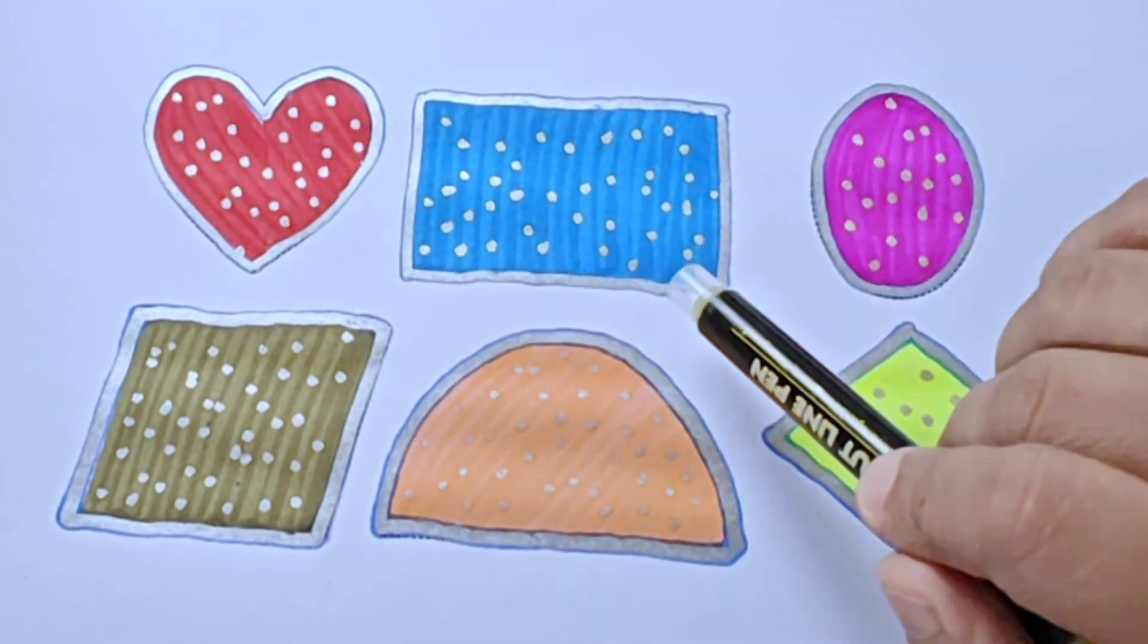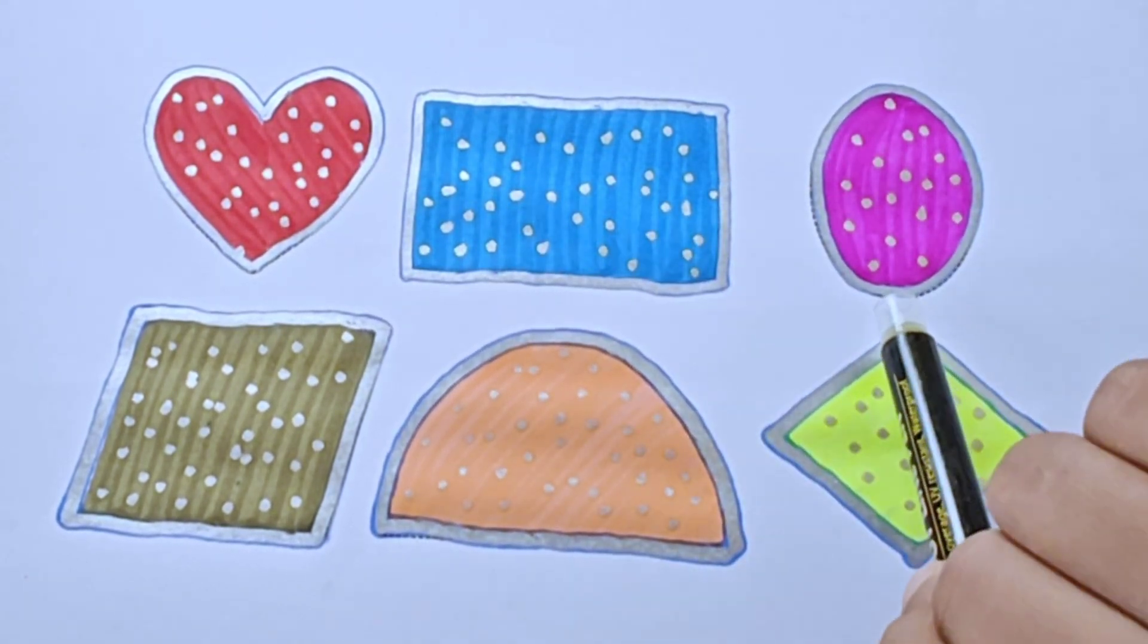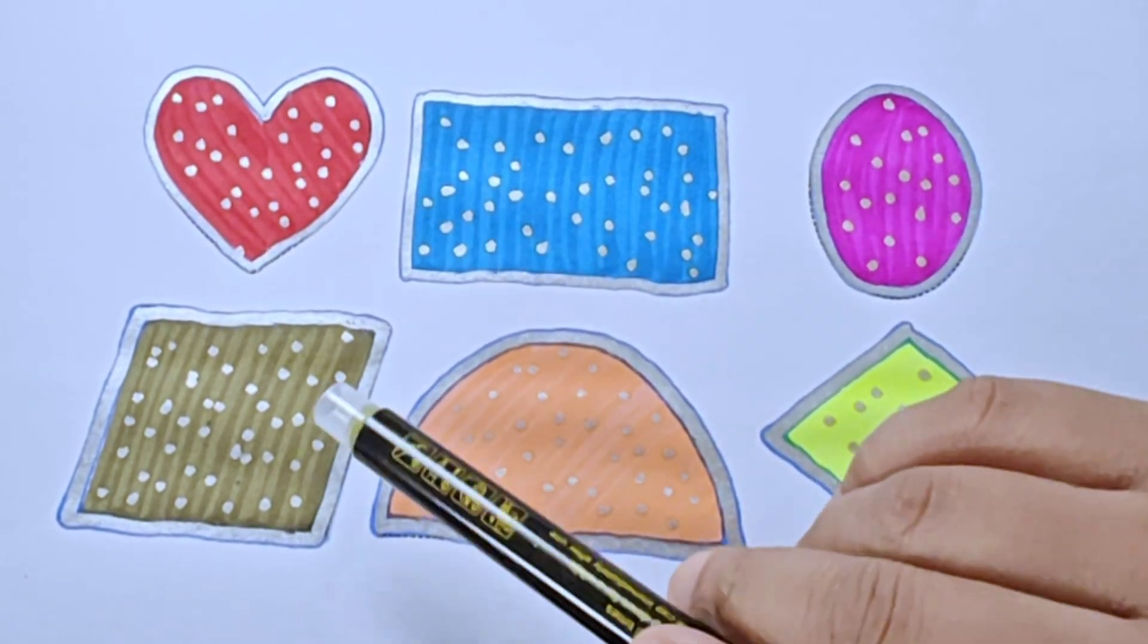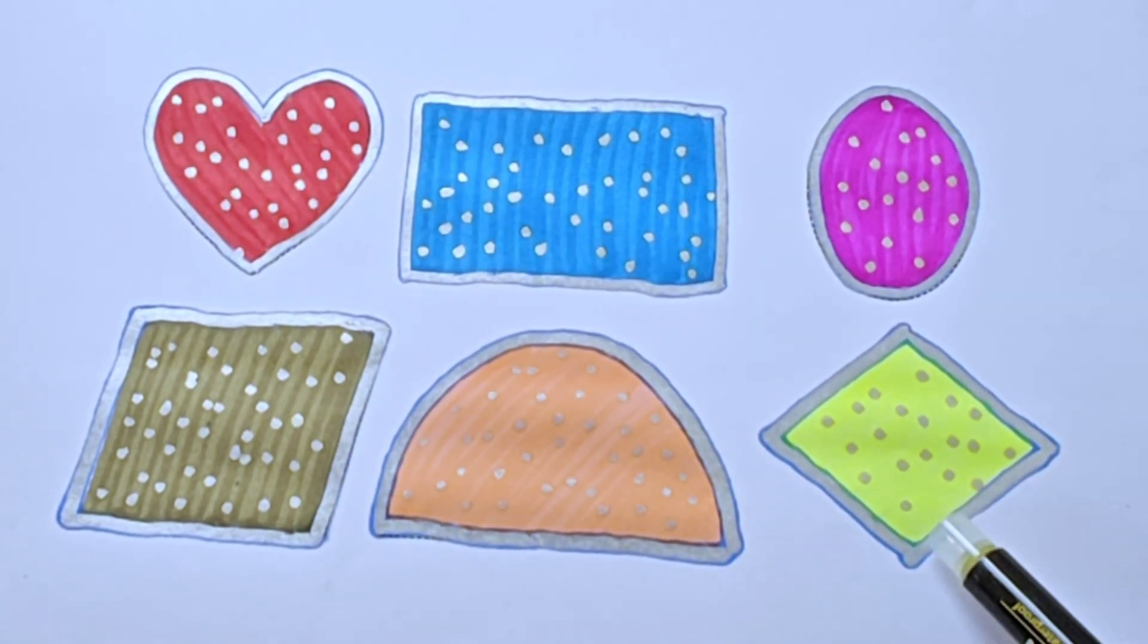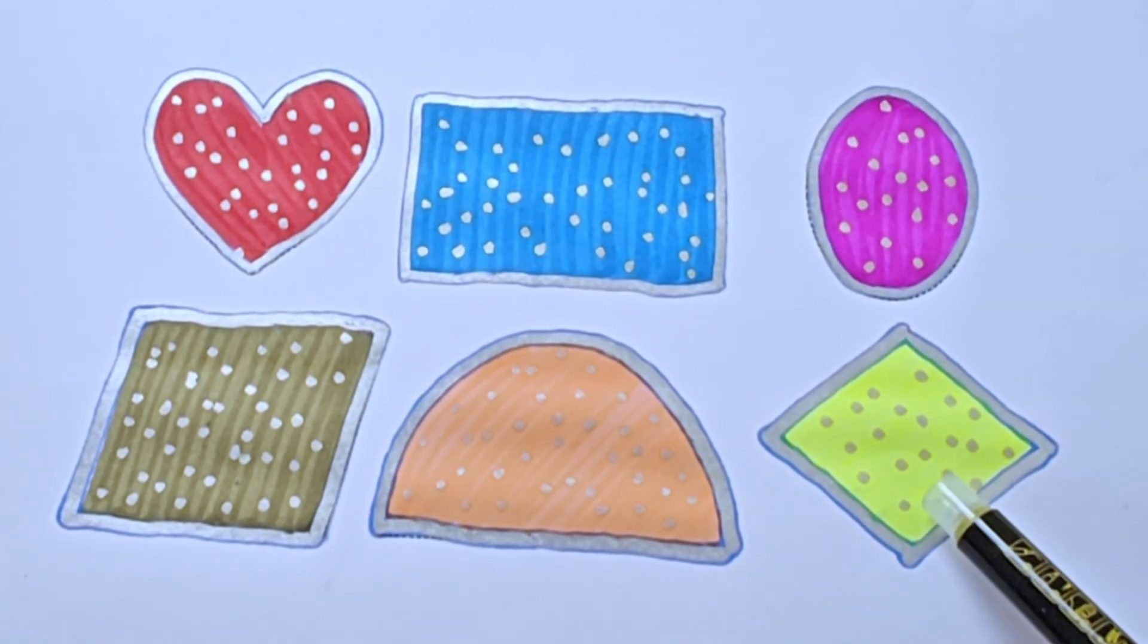This is heart red color, rectangle blue color, oval pink color, parallelogram olive green color, half circle or semi circle peach color, rhombus or diamond fluorescent yellow color.